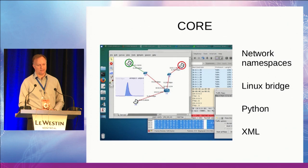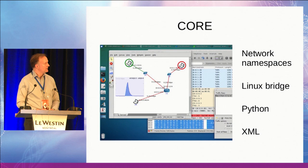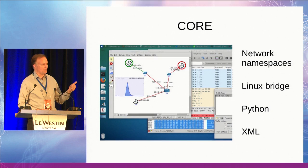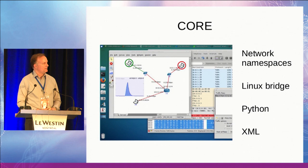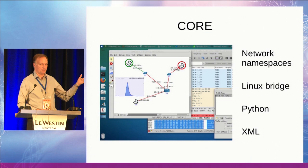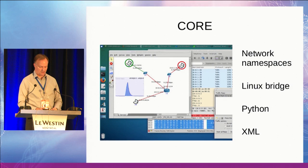The CORE network emulator — this is just a screenshot — is based on Linux namespaces, uses Linux bridging, and has a Python API so it's very extendable. The file format it uses when saving network scenarios can be a standard text file, XML, or you can also export it as a Python script. Because it's extendable using Python, after you've exported the Python script you can do some additional editing and actually create an automated test scenario for yourself as well.